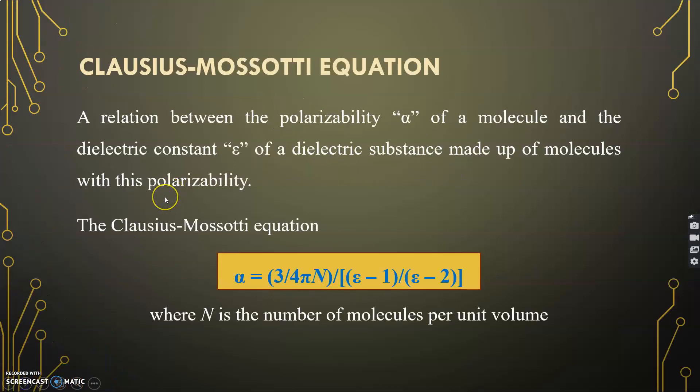Let us begin with the Clausius-Mossotti equation. The Clausius-Mossotti equation is a relation between the polarizability alpha for a molecule and epsilon, which is the dielectric constant for a dielectric substance.